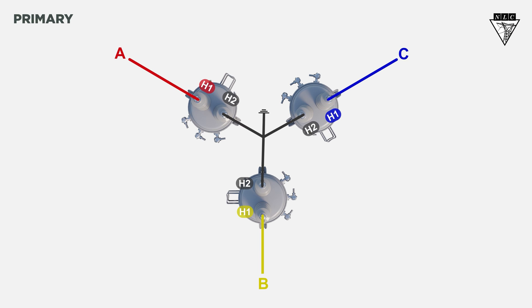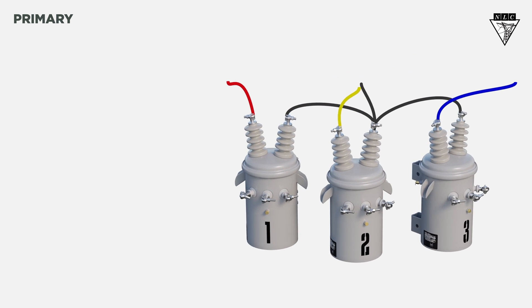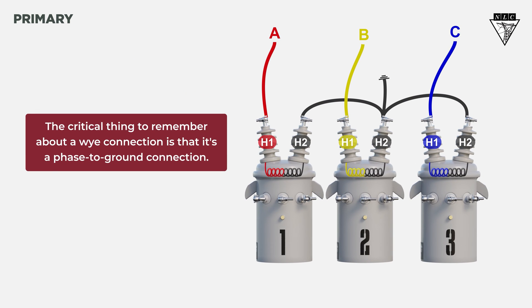Now, let's see the primary connections from the front view. The critical thing to remember about a Y connection is that it's a phase-to-ground connection. Grounding the neutral is a common practice for safety and stability reasons. Still, there could be instances where the neutral is not grounded, depending on the specific requirements of the electrical system. You can learn more about this in our other Y connection videos.